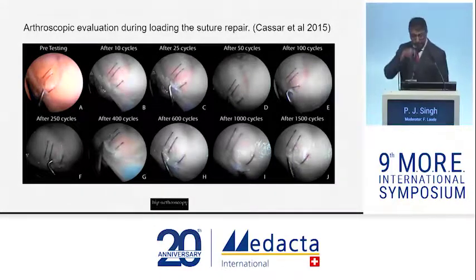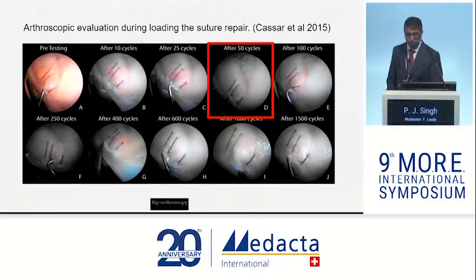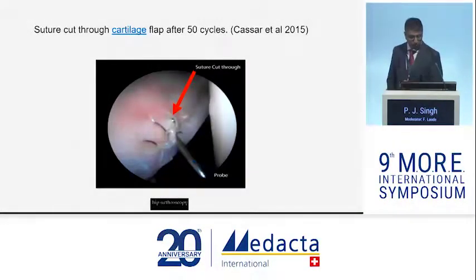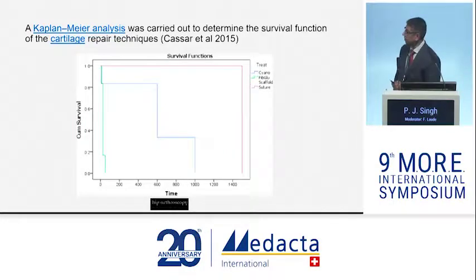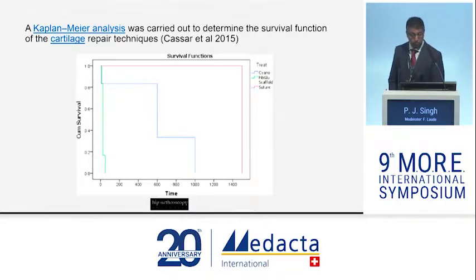They also analysed the impact of purely suturing the articular cartilage, finding that sutures were inevitably cutting out after 50 cycles. None of our repair techniques are perfect. Survival analysis from this cadaveric study showed that fibrin provided the least durable repair, while suturing the cartilage produced the most durable repair.